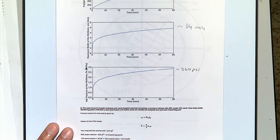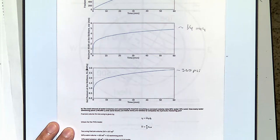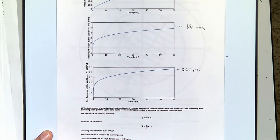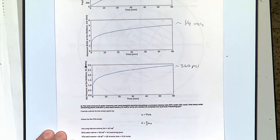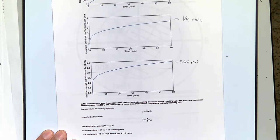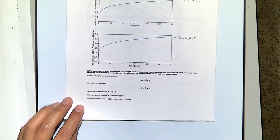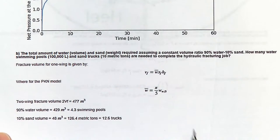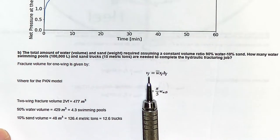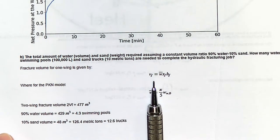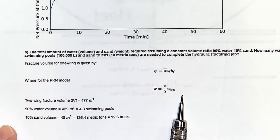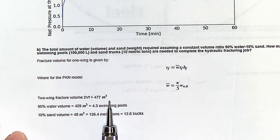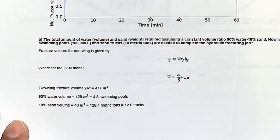This first part is relatively easy. The next part is also relatively easy but requires some other computations. The first thing you have to do is compute the fracture volume. For one wing, use this equation: average width times length times height — this gives you the total fracture volume.